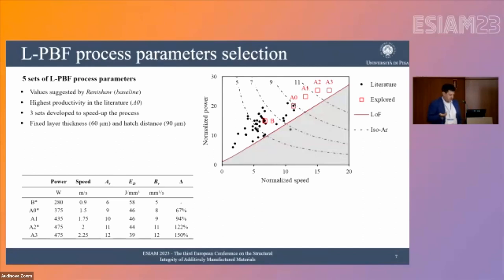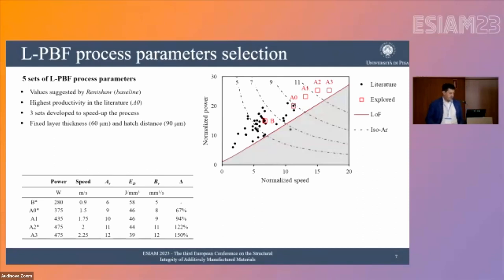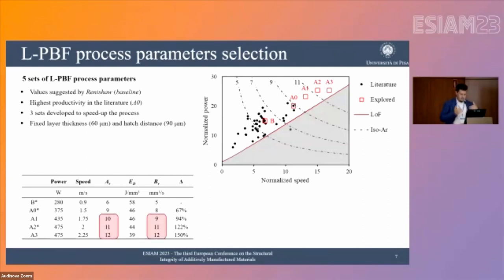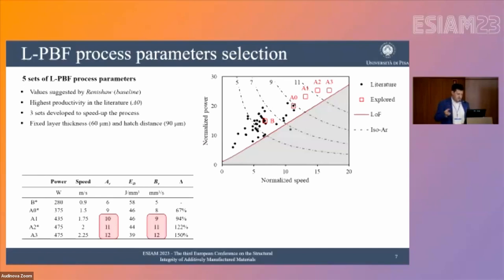We started from the value suggested by the manufacturer of the PBF printer as our baseline, then tested the highest productivity value found in the literature, named A0. We introduced three parameters A1, A2, and A3, characterized by a higher aspect ratio compared to the baseline and the literature value. These values correspond to a really significant increase in the process build rate, passing from five cubic millimeters per second at baseline to substantially higher values.